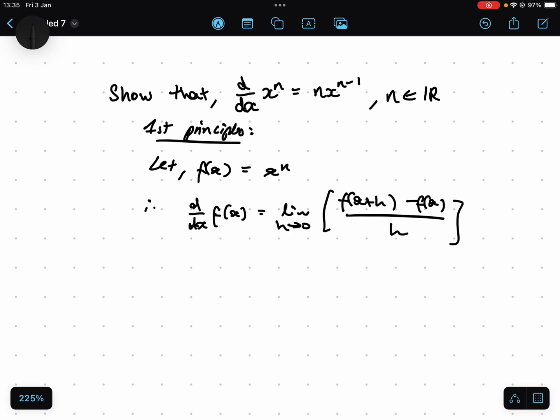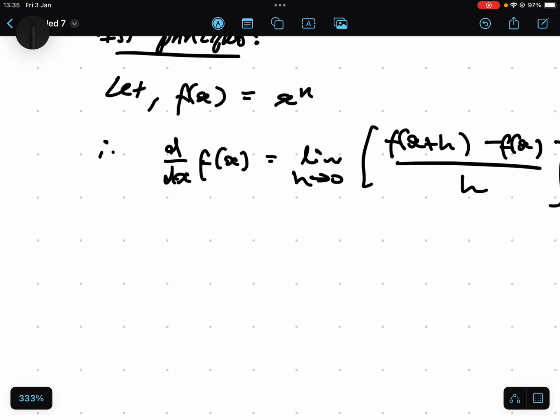Let's go ahead and replace it with x to the n. So d/dx of x to the n, that would mean that is equal to this limit. So you just replace (x+h) to the power of n minus x to the n over h. Now what we have here is we've got this.